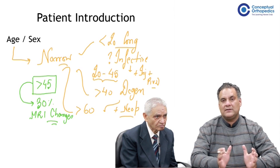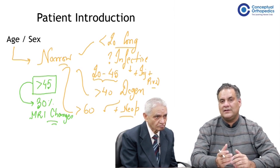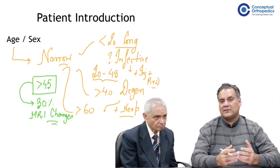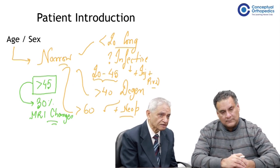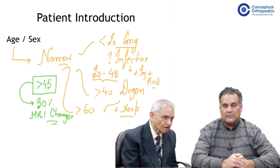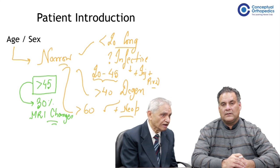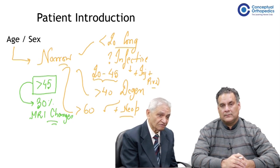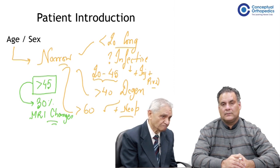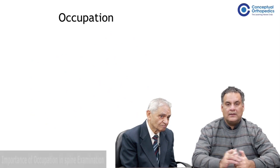Some diseases have sex predilection. Ankylosing spondylitis is not exclusively but more commonly seen in males — for every 10 patients, roughly one would be a female. Rheumatoid arthritis is more commonly seen in females. In ankylosing spondylitis and rheumatoid disorders, one has to keep in mind the family history.